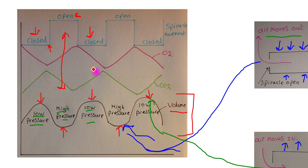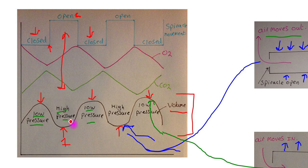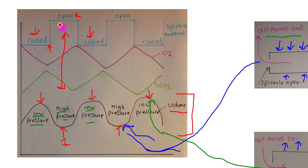One last thing before looking at the question is to relate the opening and closing of the spiracles and the oxygen and carbon dioxide levels with the ventilation movements at the bottom of the graph. At point one, the volume of the tracheal system is low and the pressure is high, the spiracle is open, and air within the tracheal system is forced out through the spiracle — allowing carbon dioxide to leave and oxygen to enter.